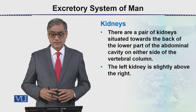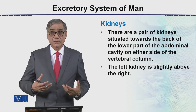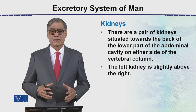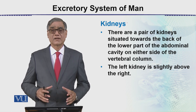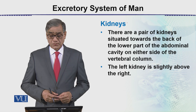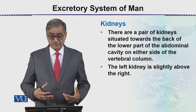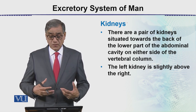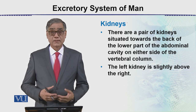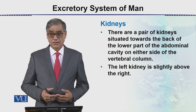The kidneys are a pair of bean-shaped bodies which are dark red, sort of brown. They are located in the lower part of the abdominal cavity on either side of the vertebral column.